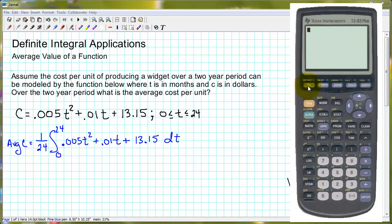To do a definite integral, we need to put our function into Y1. Now I'm going to, just so that we can do one calculation, move this constant inside of our integral. So we have here the fraction 1 over 24 times our integrand, which is .005 t squared plus .01 t plus 13.15. And since we are integrating between 0 and 24, we need to adjust our window to have a value of x going from 0 to at least 24. Let's just make it 25.